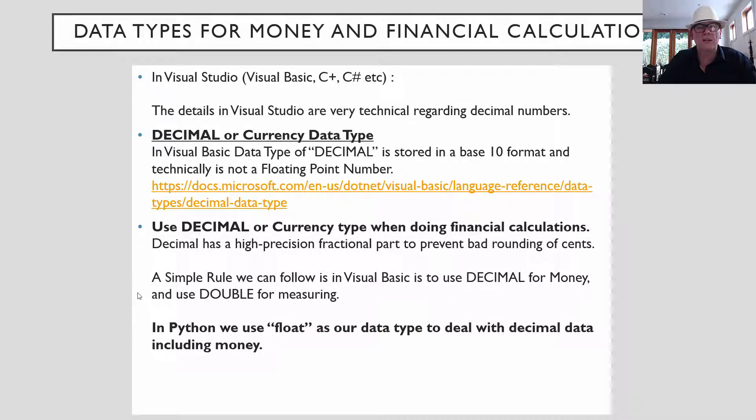So look, the data types of money and financial calculations, when we're doing Visual Studio languages, like Visual Basic, C sharp, C++, you can just use decimal or a currency data type. So for Visual Basic, use decimal for money, and the basic rule is you can use double if you're measuring things. Whereas in Python, it's a lot simpler, we just usually just use float as our data type.